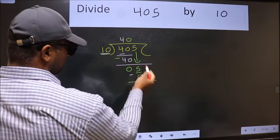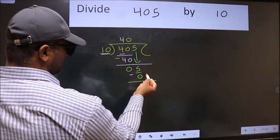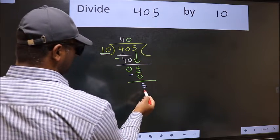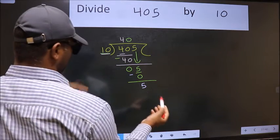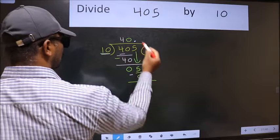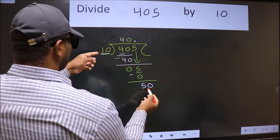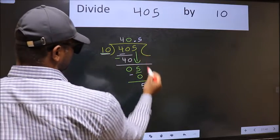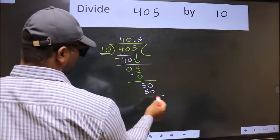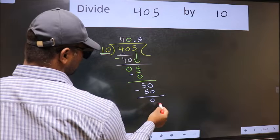Over here, we did not bring any number down. And 5 is smaller than 10. So now we can put dot and take 0, so 50. When do we get 50 in 10 table? 10 times 5 is 50. Now we should subtract. We get 0.